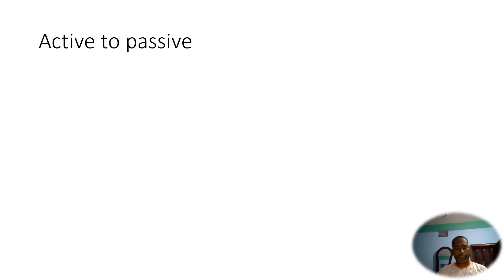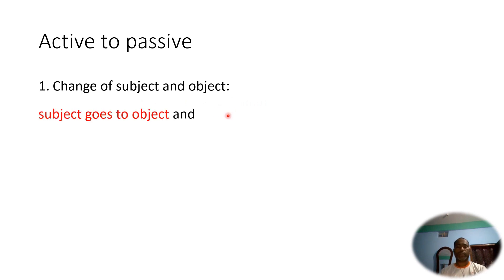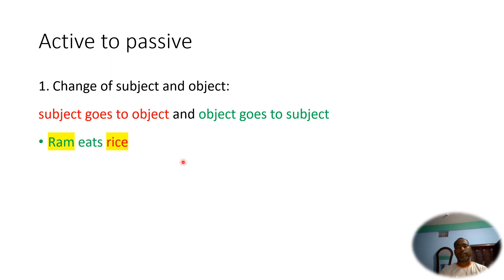Today we are going to learn about active and passive voice. In this video we are going to learn how to make active to passive. The first rule of making active to passive is the change of subject and object — subject goes to object position and object goes to subject position.